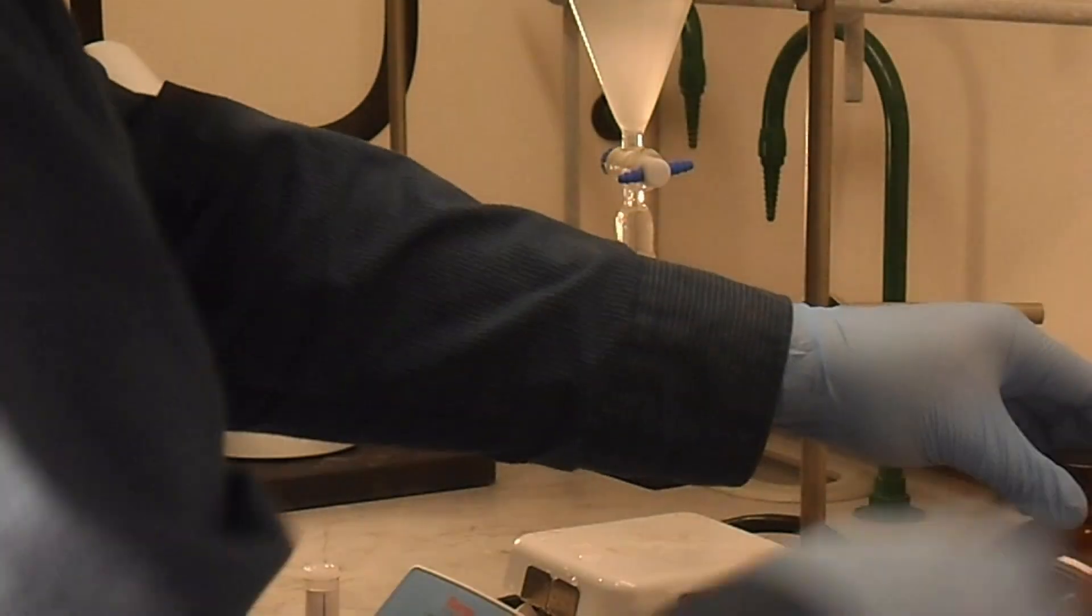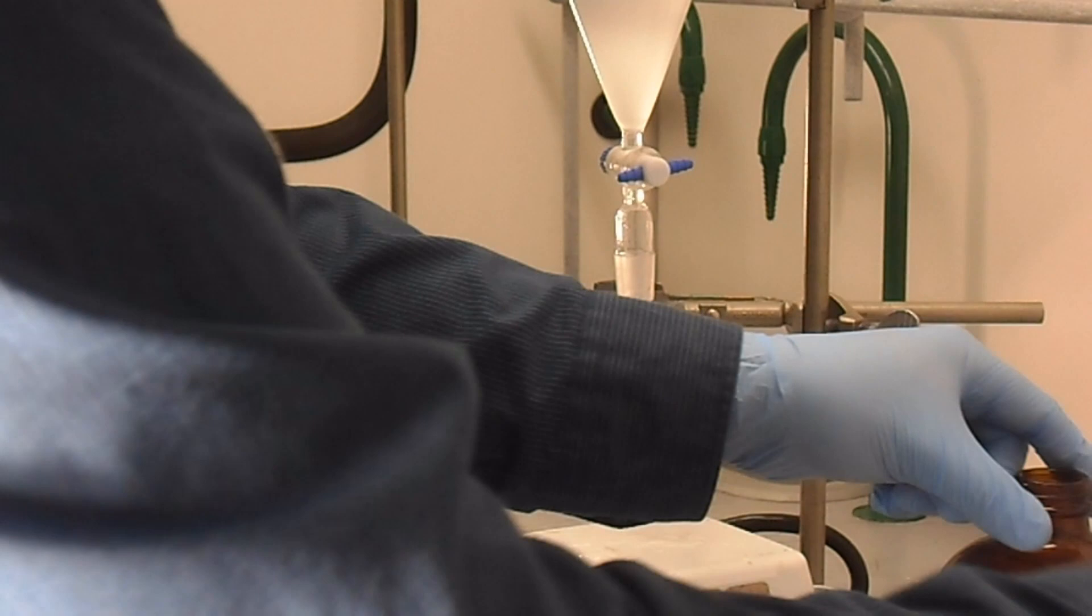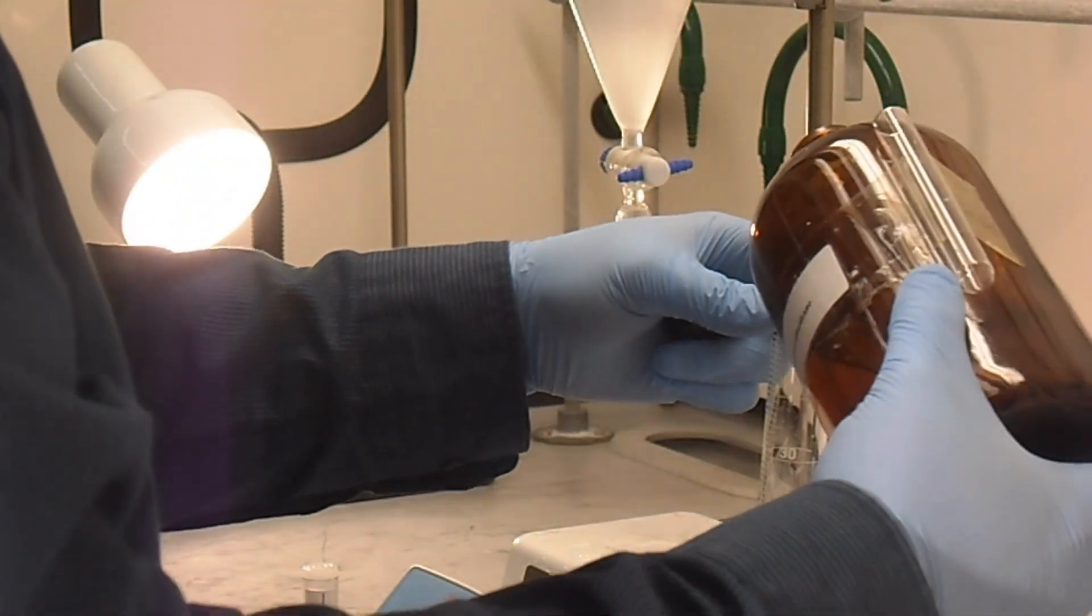Once our first extraction is complete, we have drained our DCM layer into an Erlenmeyer flask. We're going to repeat the process with another 20 milliliters of dichloromethane.